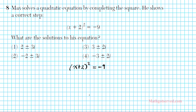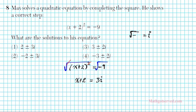First we are going to get rid of the square by taking the square root of both sides of our equation. On the left side, the square and the square root are inverse operations — they cancel out. So we have x plus 2 equals... anytime you take the square root of a negative, you have an i. The square root of negative 9 comes out as 3i. Remember the square root of negative 1 is equal to i — that's how it came about.